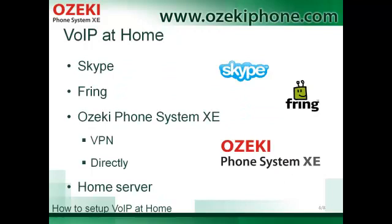Or you can use existing VoIP solutions such as Skype or Fring that are prepared for private use. For private use you can use Skype or Fring to make or receive calls. You need to register and download the application, and after the configuration you can call other Skype or Fring users for free, or you can call traditional phones which has some charges.